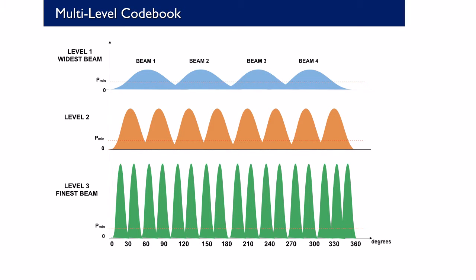Due to the increased path loss at 60 GHz, the AP transmits using highly directional beams where each beam is defined by a multi-level codebook.